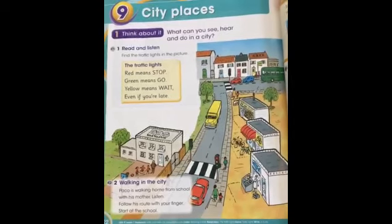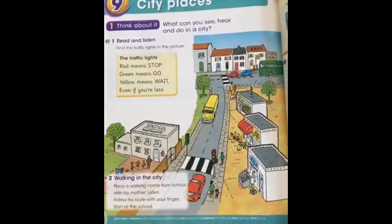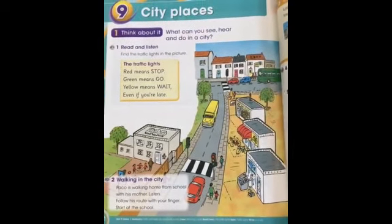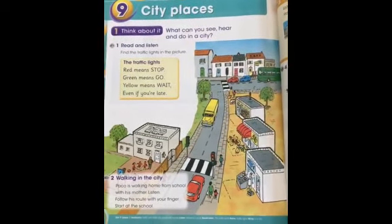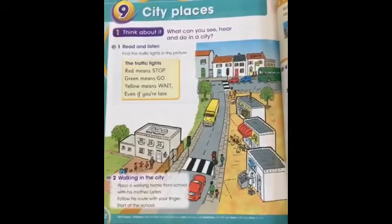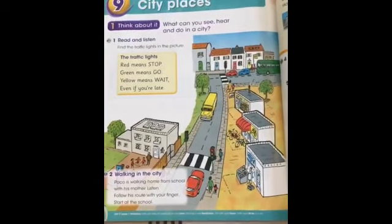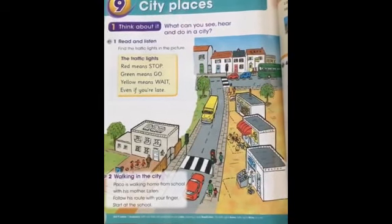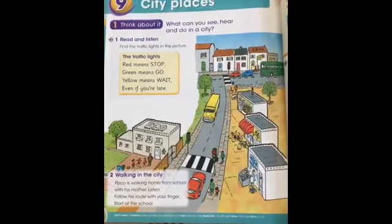The traffic lights. Red means stop. Green means go. Yellow means wait, even if you're late.